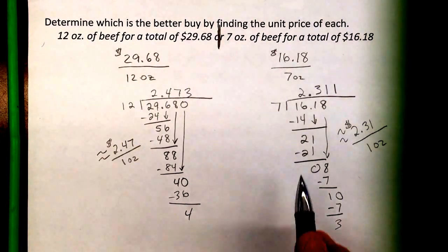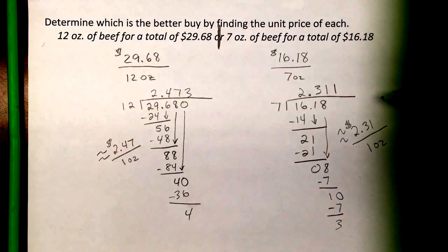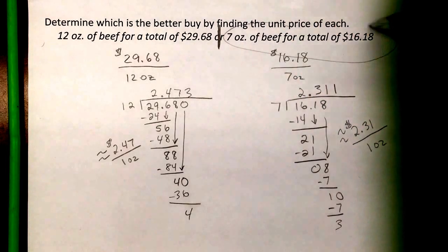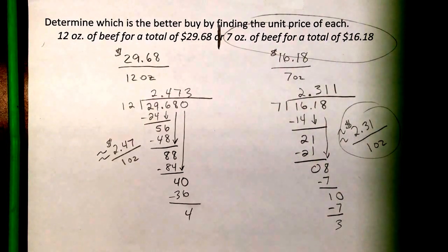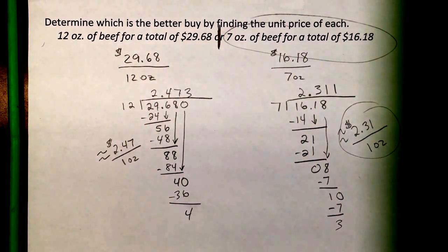So the better buy would be this one, because it's cheaper. This is the lower price. So this one would be a better buy, and that's the cost of $2.31 per ounce. That must be some really good ground beef to be paying that much per ounce. That's really, really expensive for an ounce.